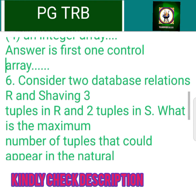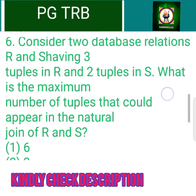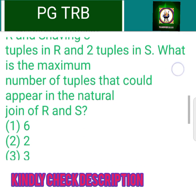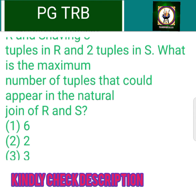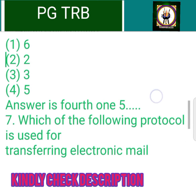Consider 2 database relations R and S having 3 tuples in R and 2 tuples in S. What is the maximum number of tuples that could appear in the natural join of R and S? 1. 6, 2. 2, 3. 3, 4. 5. Answer is 4th: 5.